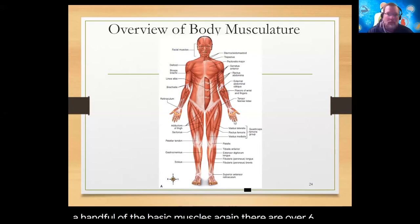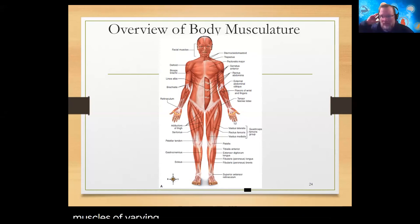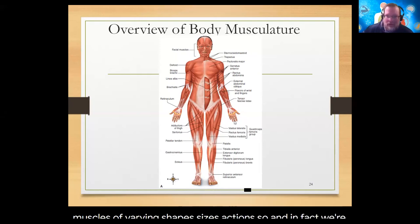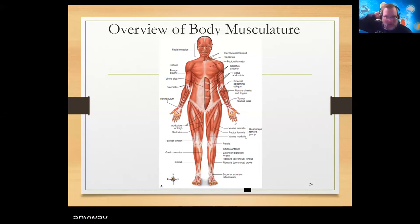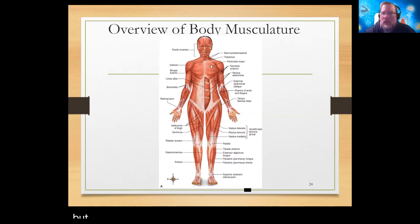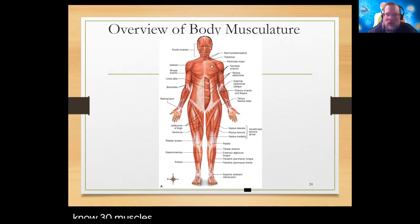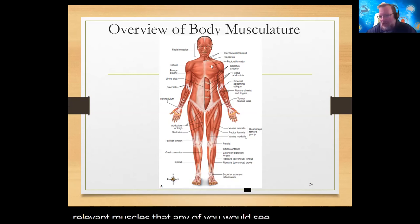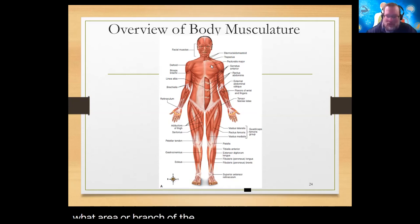Again, there are over 600 muscles of varying shapes, sizes, and actions. In fact, we're still discovering new skeletal muscles. We just discovered a couple of really tiny ones at the base of the occipital bone, probably about 10 years ago. We are only concerned with maybe 30 muscles at the most - the most clinically relevant muscles that any of you would see regardless of what area or branch of the medical industry you go into.